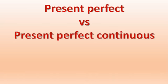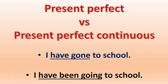Okay guys, welcome back to your English class. Today I'm going to explain what is the difference between present perfect and present perfect continuous. Here we go. We have two sentences: the first one says 'I've gone to school' — that's present perfect — and 'I have been going to school' — that's present perfect continuous.